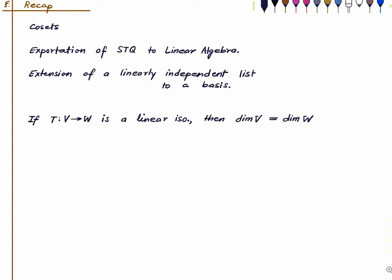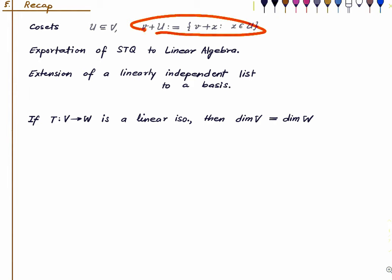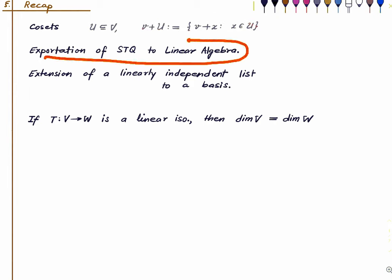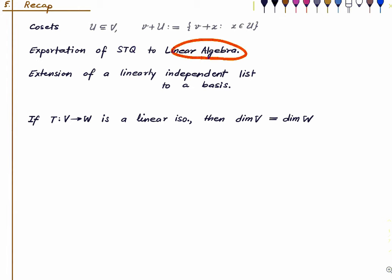Let us recall what we need. We need to know about cosets. If we have a subspace U of a vector space V, then cosets of the subspace U are defined as sets of this form. Then we need to know about how to export set-theoretic quotienting to the setting of linear algebra.